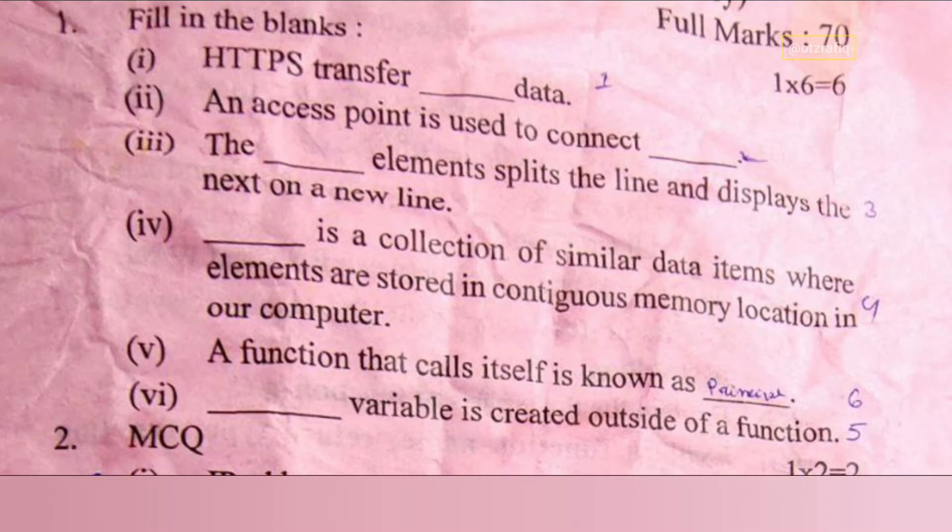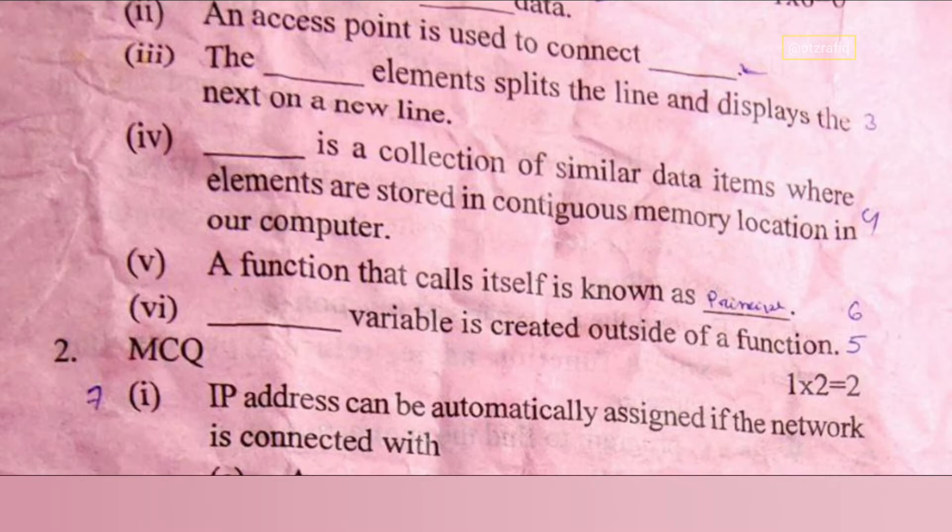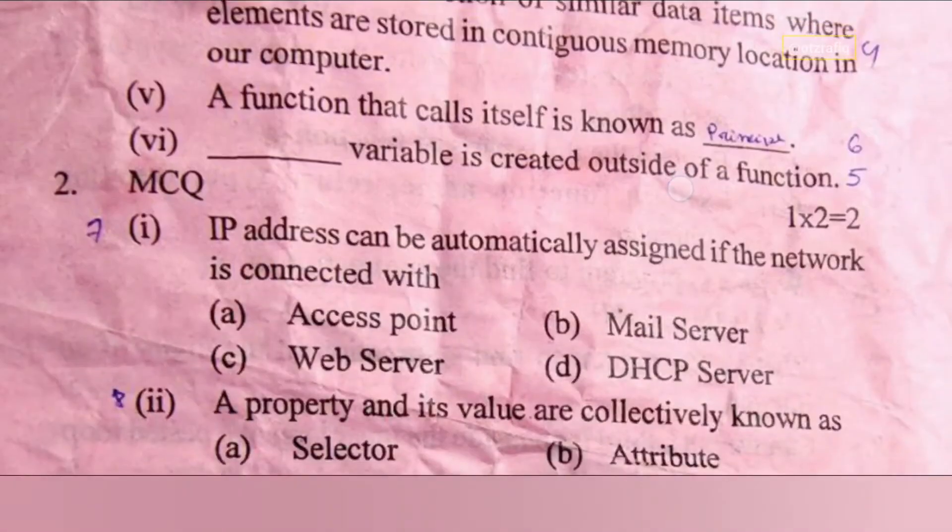I think that's a printing mistake. Number four: this is a collection of similar data items where elements are stored in continuous memory location in our computer - it is array. Number five: a function that calls itself is known as recursive function. Number six: this variable is created outside of a function - it is global variable.